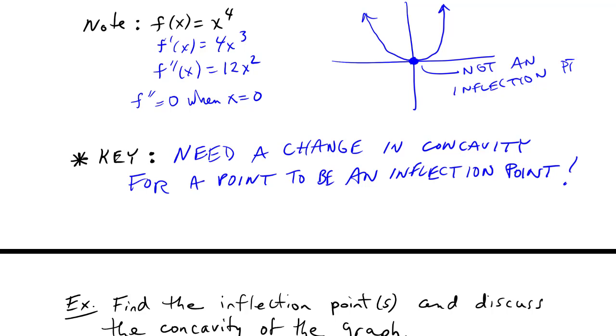So again we're going to set up candidates. The only places where it could happen is when the second derivative is zero or undefined.